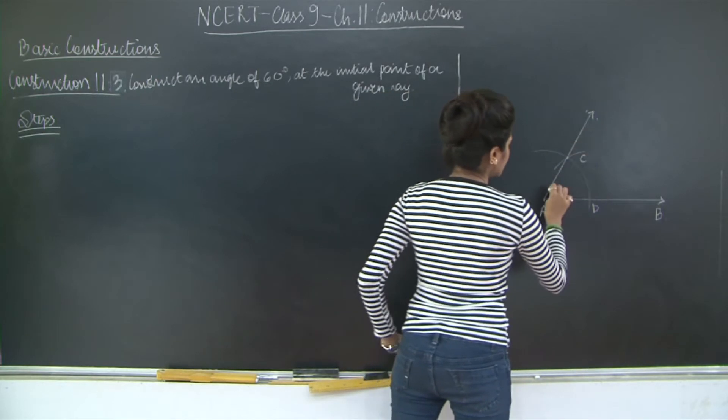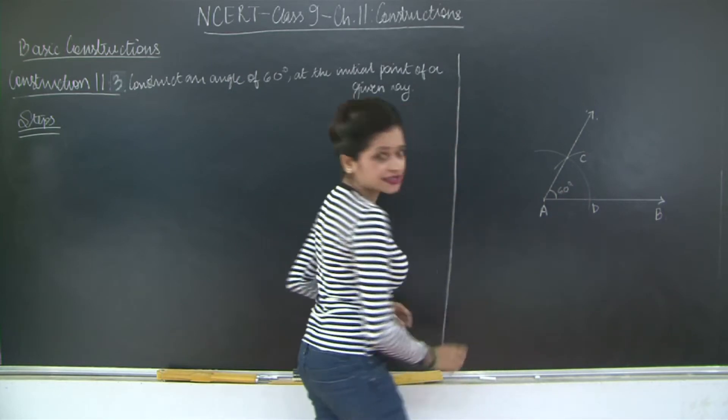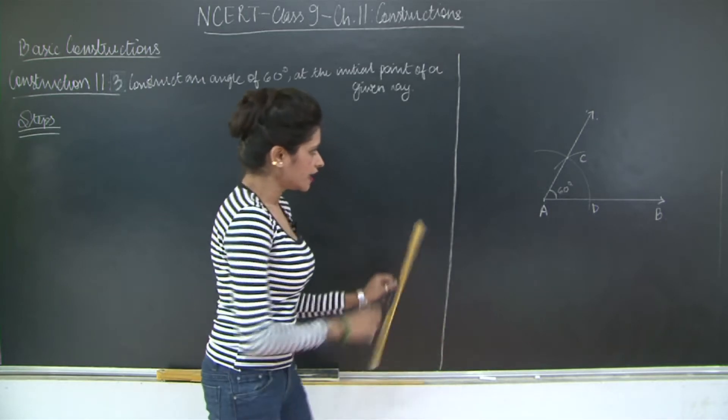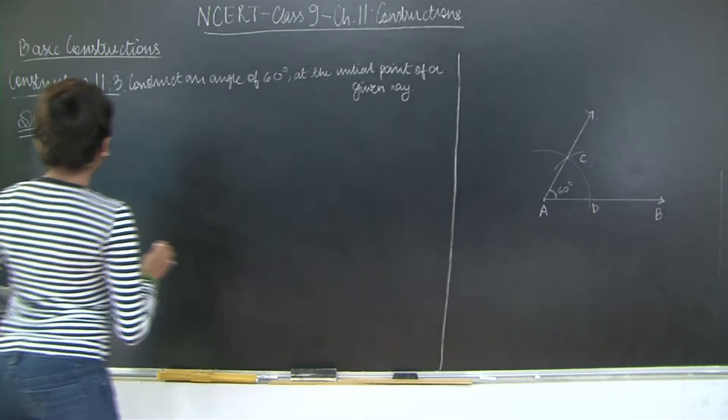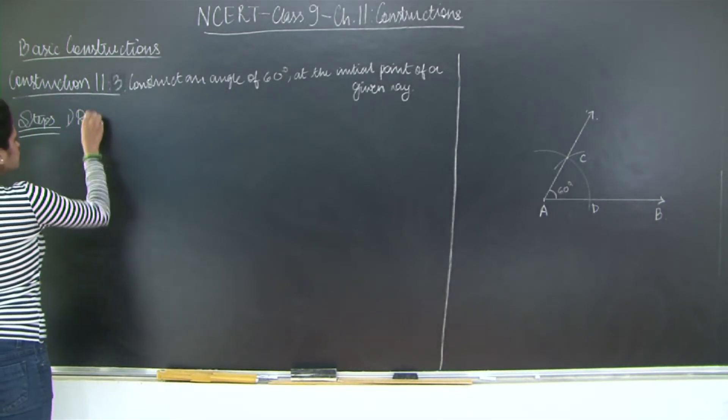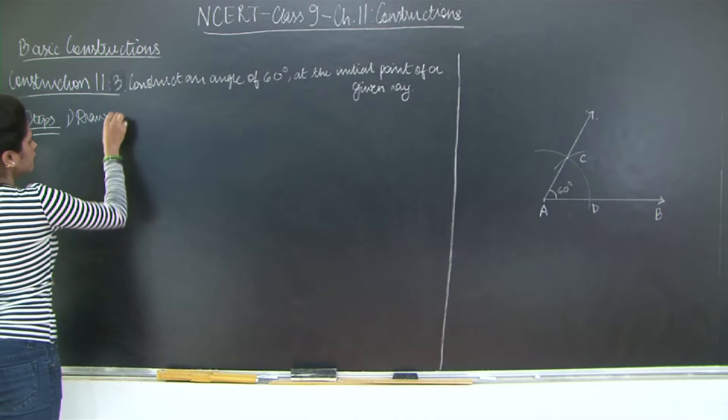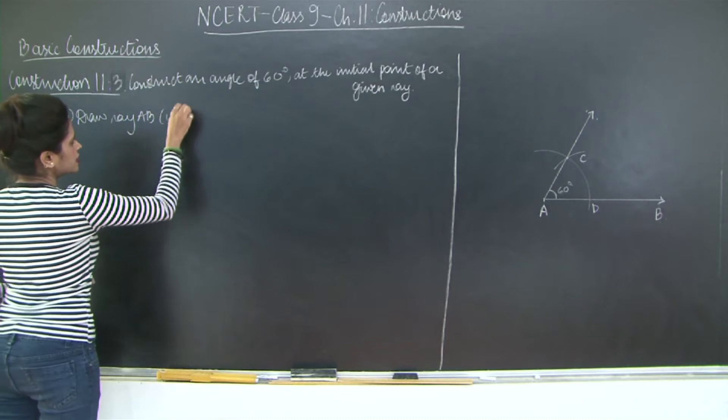This point out here is C. You need to join AC. This angle out here is 60 degrees. So why is it 60 degrees? We will see. Let us first write the steps then I will show you the proof.